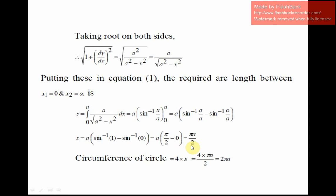But we are interested in finding the full circumference. Whatever arc length we obtain in the first quadrant, we multiply by 4. So the final answer is 4s = 4 × (πa/2) = 2πa. We all know that the circumference of a circle is 2πa, but in this method we found it using the formula of rectification. Hope you understand this example.